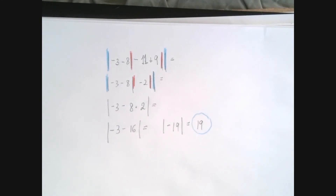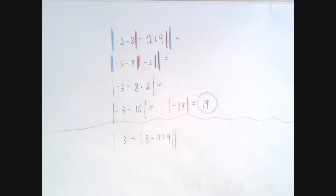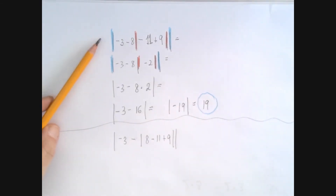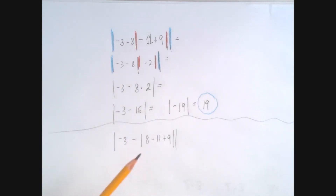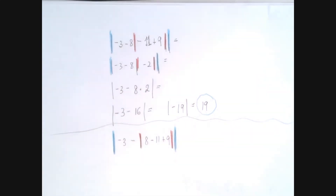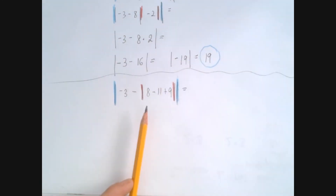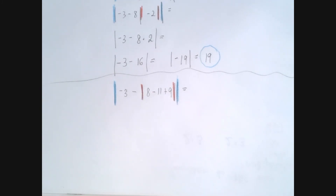All of these problems have the same numbers and operations — it's just the varying locations of the absolute value signs that makes the problem completely different. This next problem is almost identical to the previous one. The only difference is that here the absolute value sign is after the 8, and here it's before, and that's going to completely change the entire problem. So we start by pairing up the parentheses. This cannot be a pair, so it must be closing both pairs, giving us two absolute value signs nested inside each other. We have 8 minus 11 plus 9 inside; we perform that, take the absolute value, subtract from negative 3, and finally take the absolute value of the result.